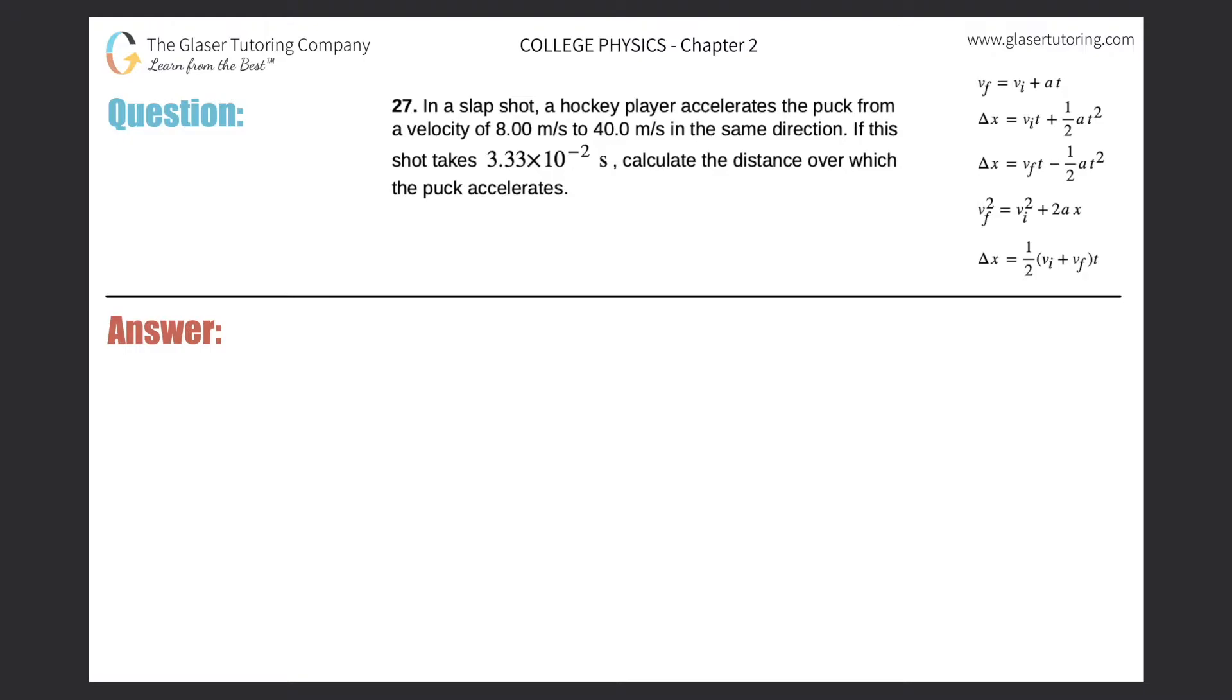Number 27. In a slap shot, a hockey player accelerates the puck from a velocity of 8 meters per second to 40 meters per second in the same direction. If this shot takes 3.33 times 10 to the minus 2 seconds, calculate the distance over which the puck accelerates.